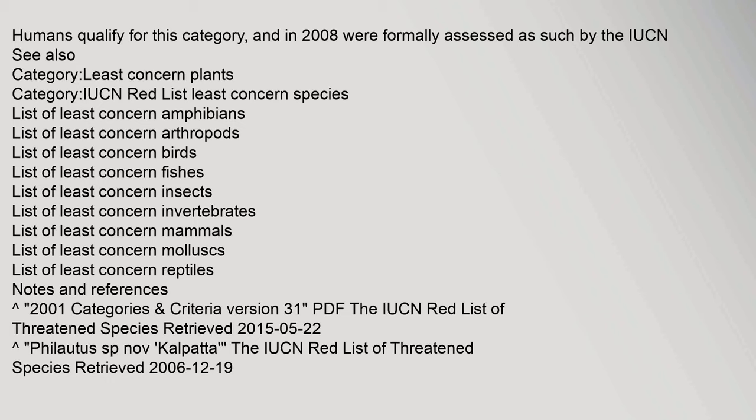Least Concern Plants category. IUCN Red List Least Concern Species: List of Least Concern Amphibians, List of Least Concern Arthropods, List of Least Concern Birds, List of Least Concern Fishes, List of Least Concern Insects, List of Least Concern Invertebrates, List of Least Concern Mammals, List of Least Concern Molluscs, List of Least Concern Reptiles. Notes and References 2001 categories.